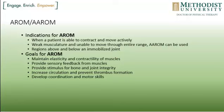When a patient can perform active range of motion or active assistive, it is best to do that. When the patient is able to contract actively but has weak musculature and is unable to move through the entire range, you should try active assistive range of motion. For regions above and below an immobilized joint, use active range of motion to keep them mobile. The goals include maintaining elasticity and contractility of muscles, providing feedback for muscles, providing stimulus for bone and joint integrity, increasing circulation, preventing DVT formation, and developing coordination and motor skills. Before adding resistance, the patient needs to be able to perform a movement smoothly with active range of motion.